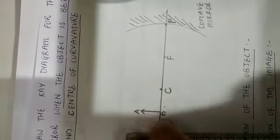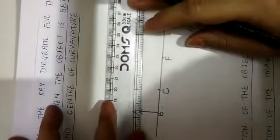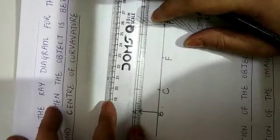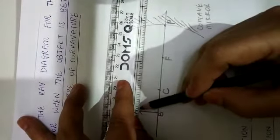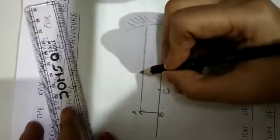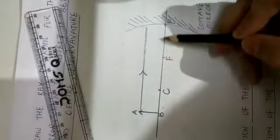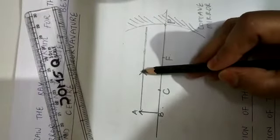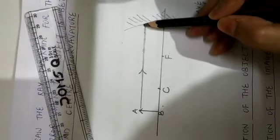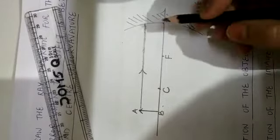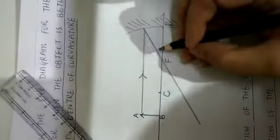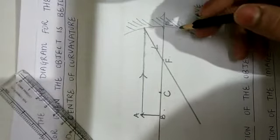Now following those 3 rules — this is the incident ray of light which goes parallel to the principal axis. Following the first rule, I am drawing my incident ray of light which is parallel to the principal axis. This ray of light strikes the concave mirror and will pass through the focus, so the reflected ray of light passes through the focus. That is my first rule.